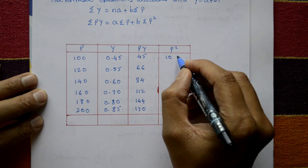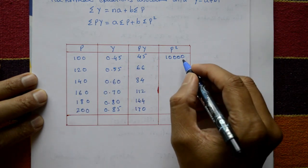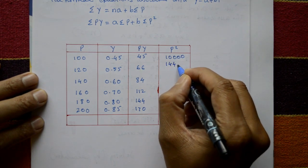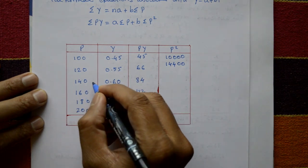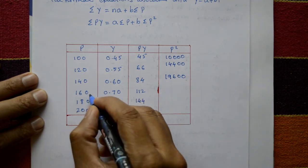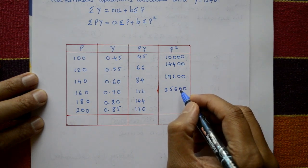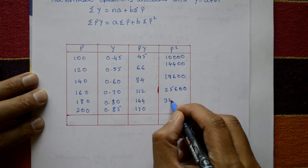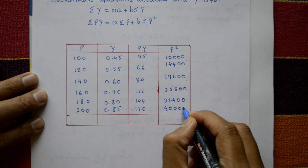Now take P square. This whole square means 100 square is 10,000, this one is 14,400, this one is 19,600, 25,600, 32,400, and this one is 40,000.